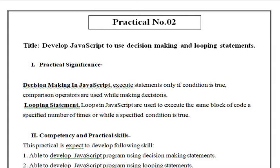In our first chapter, that is basics of JavaScript programming, we learned the concept of decision-making and looping statements. Decision-making in JavaScript executes the statement only if the condition is true, and comparison operators are used while making decisions. Looping statements in JavaScript are used to execute the same block of code a specified number of times, or while the specified condition is true.